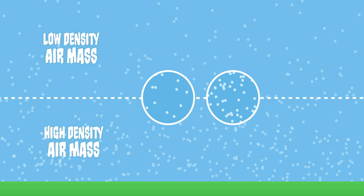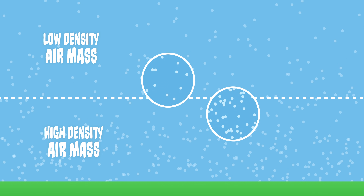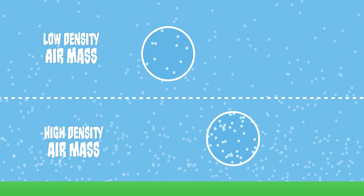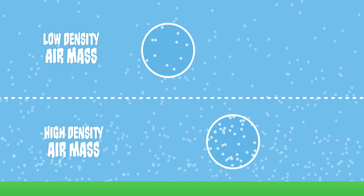Atmospheric circulation is the large-scale patterns of how air moves around the Earth's atmosphere. Air, just like everything else, has mass and therefore density. An air mass is a term used to describe a large body of air that has uniform density. It is the varying densities of different air masses that causes the air to circulate, with air masses moving higher or lower until they are surrounded by air of the same density.